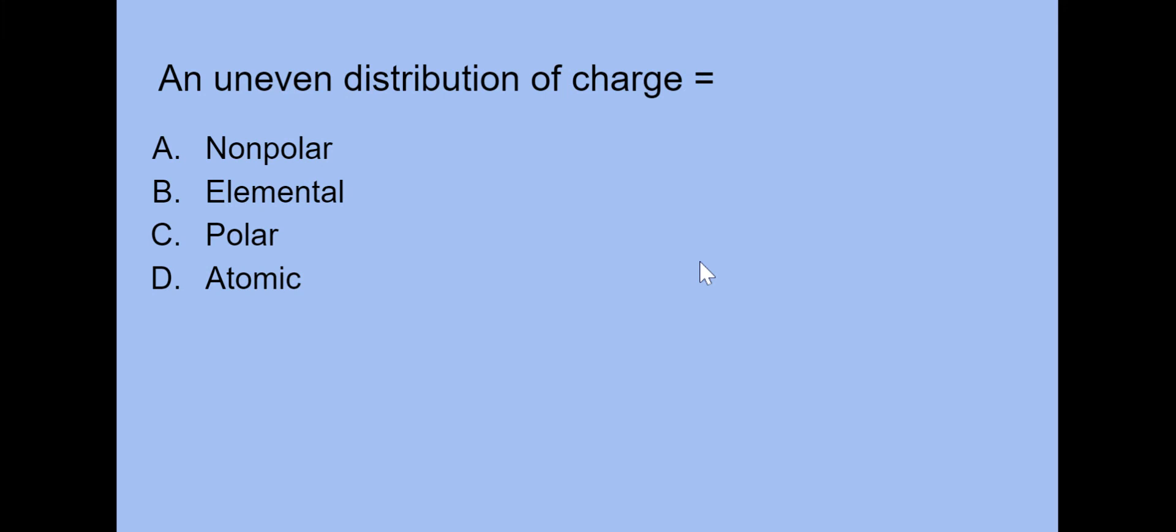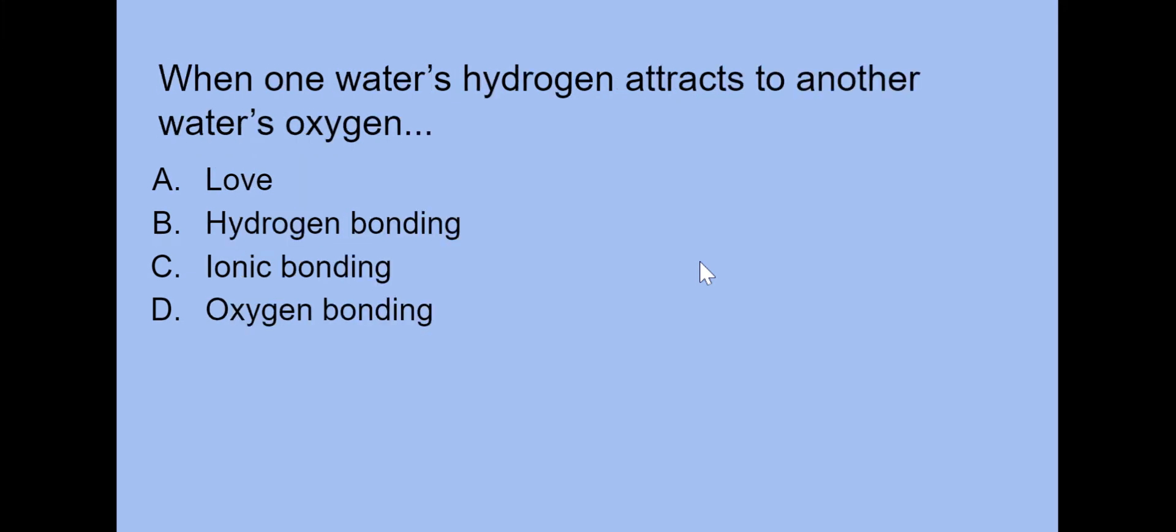An uneven distribution of charge is known as nonpolar, elemental, polar, or atomic? Yeah, if you guessed polar, you were correct. When one water's hydrogen attracts to another water's oxygen, is that love, hydrogen bonding, ionic bonding, or oxygen bonding? If you guessed B, hydrogen bonding, you were correct.